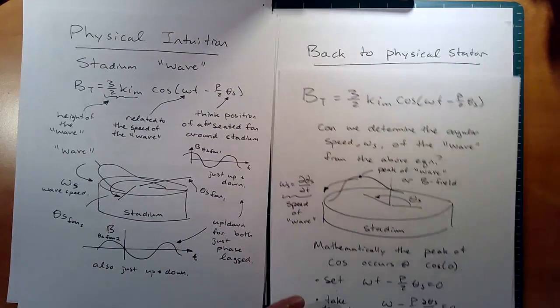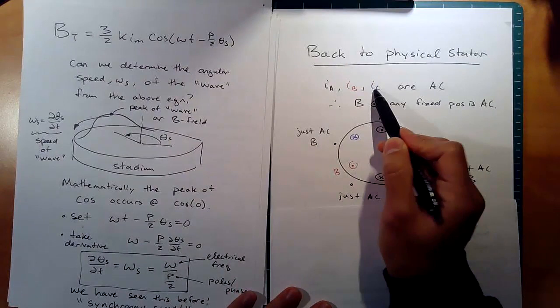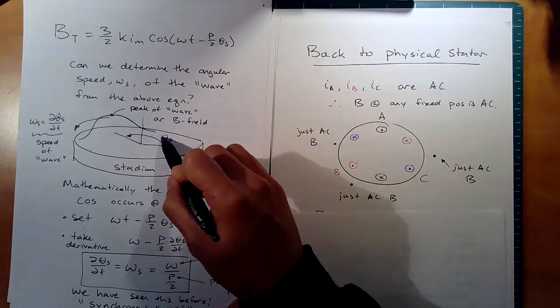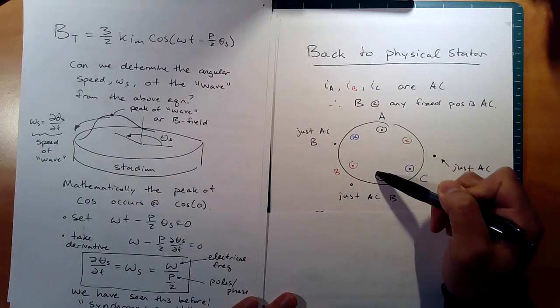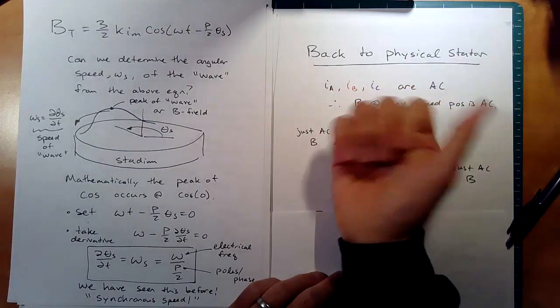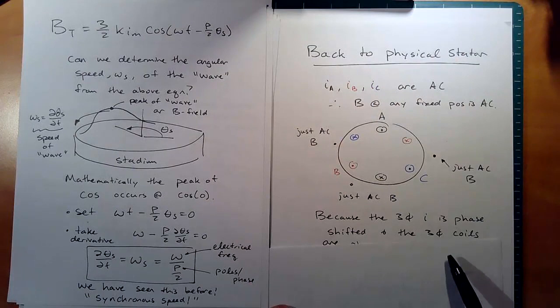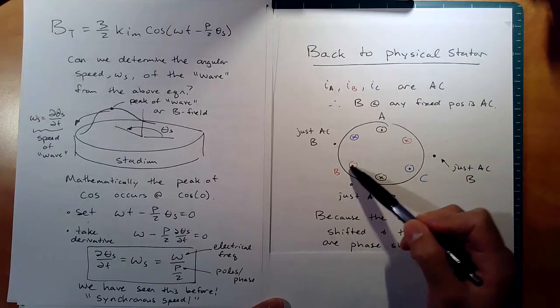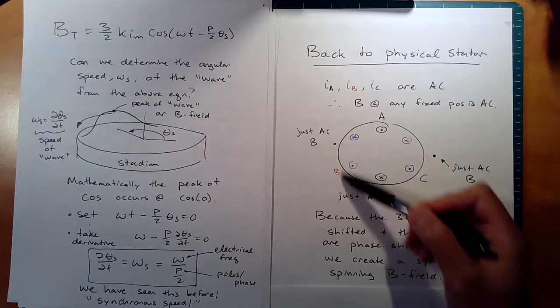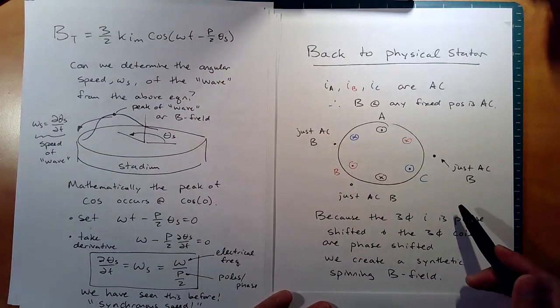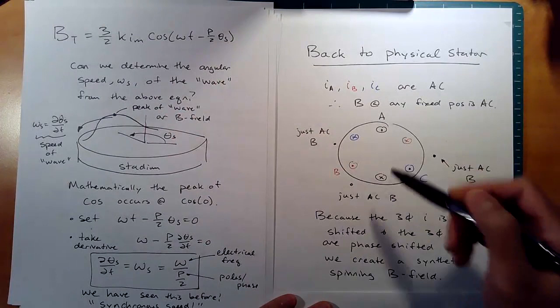Going back to the physical stator: I_A, I_B, and I_C are AC, balanced, and oscillating. That means B at any fixed point around the stator — just like a fan in the stadium — experiences only AC, an up and down oscillation. Each coil is just pumping in and out. But what makes it special is that because the three-phase current is shifted 120 degrees electrically and the coils are shifted 120 degrees mechanically, you get a synthetic spinning magnetic field. It's all described by that equation, whether you approach it mathematically or by imagining the B field at different points in time.